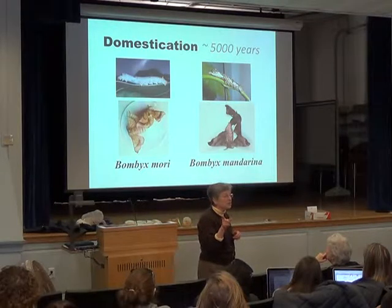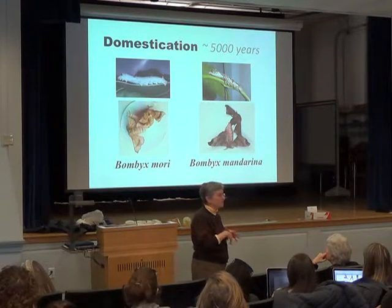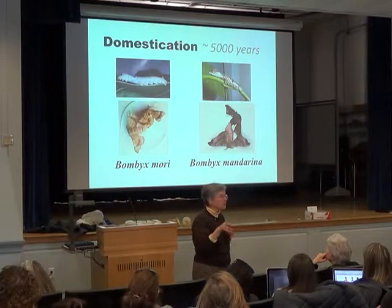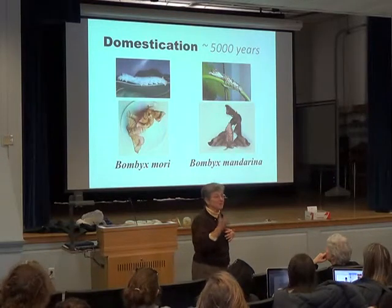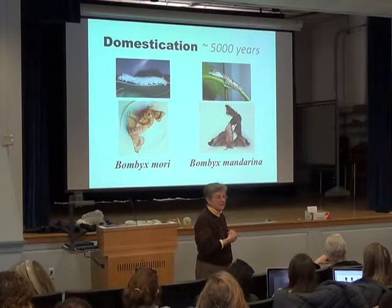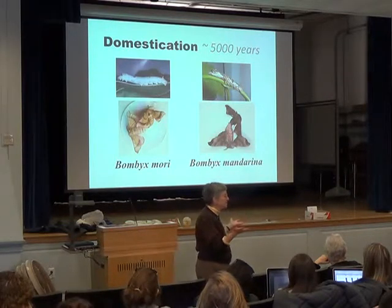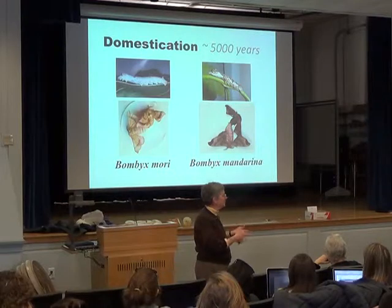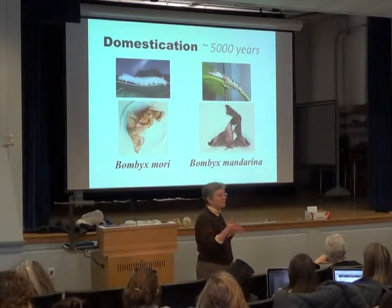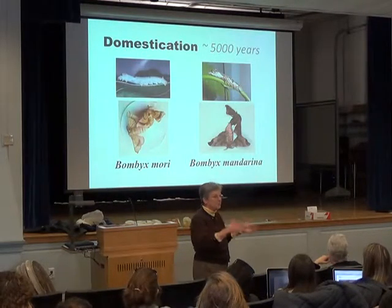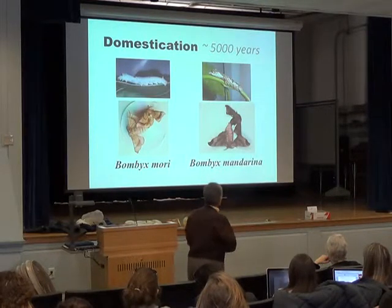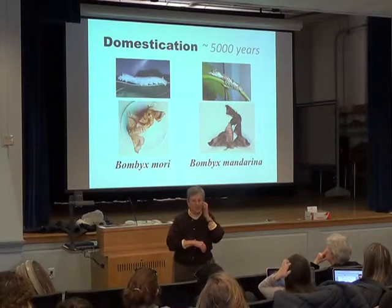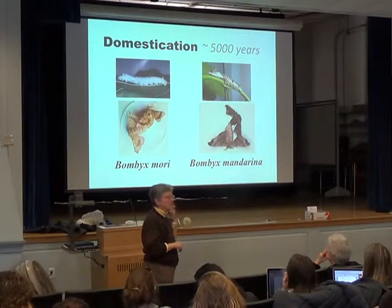Silkworms only grow one generation a year in the wild, but we have different strains — some in colder climates produce one or two generations per year, while tropical ones do multiple generations continuously and never hibernate. This is all due to human selection, just like selecting cattle to produce more milk or richer milk, like Jersey cows. Humans select for desirable traits and breed together individuals that have them, while breeding out the traits they're not interested in. That's the essence of domestication.